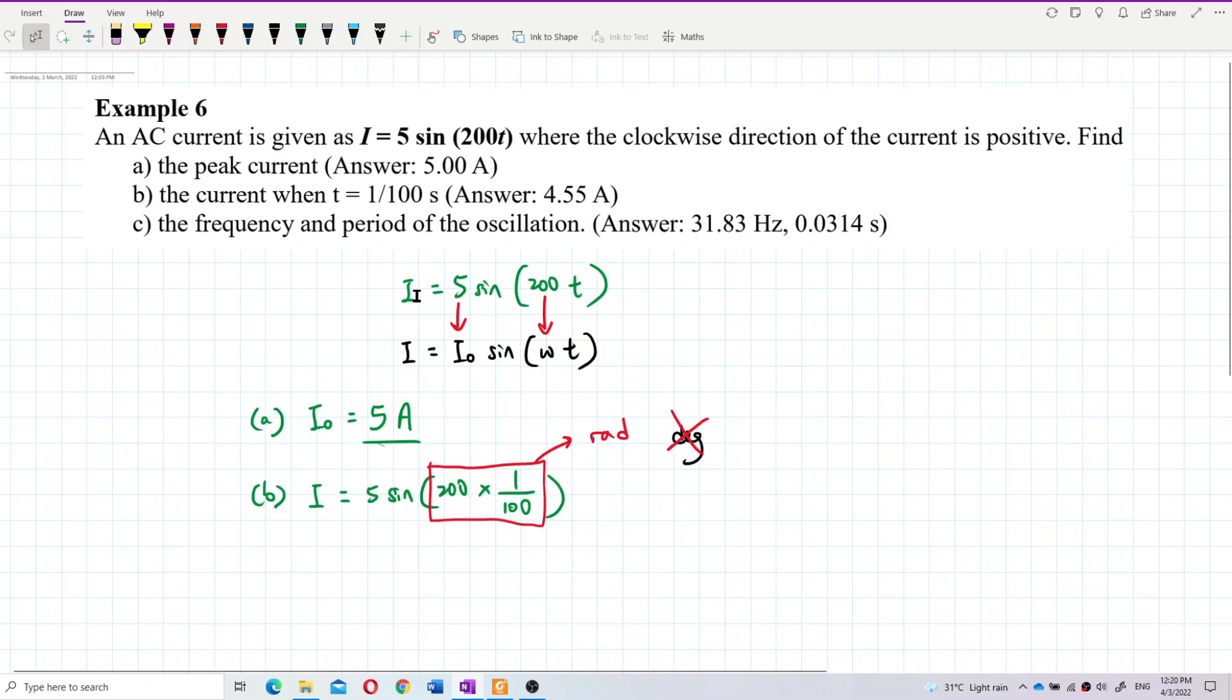I want to calculate this one, 5 sine, and this 200 over 100. So it is 4.55 amperes. That's the current.